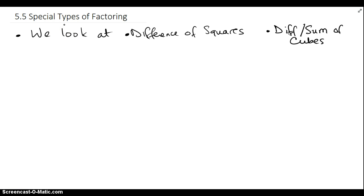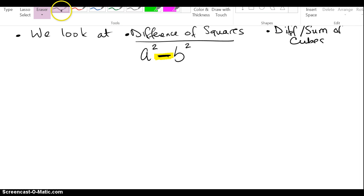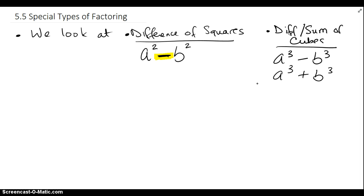In this section, we're going to look at special types of factoring, mainly focusing on difference of squares and difference or sum of cubes. The types we're going to look at are a difference of two squares, a squared minus b squared — two squares at the ends with a minus in the middle. It cannot be a plus for squares. Or difference or sum of cubes, which could be a cubed minus b cubed, or a cubed plus b cubed. Any time you see cubes or squares with binomials, it should be an indication that maybe it's one of these formulas.